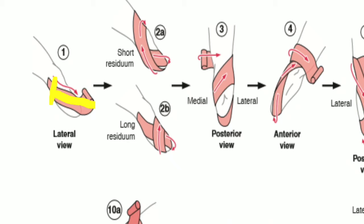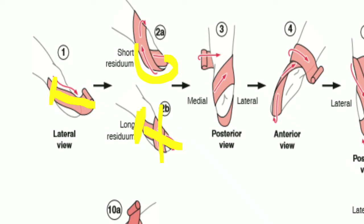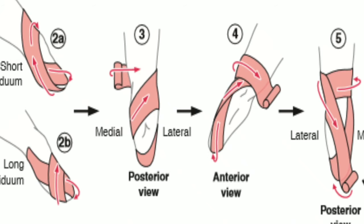If the stump or residual limb is shorter, we will directly go back to the initial starting position, as you can see in diagram 2a — we ended at the distal position then went back to the starting position. In the case of a long residual limb, we do not go back to the starting position; instead, we go directly to the lateral aspect below and try to make an X pattern. This is how we go for the second turn.